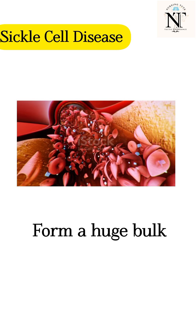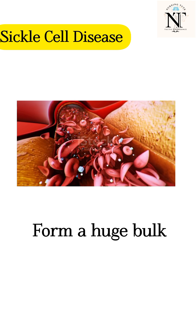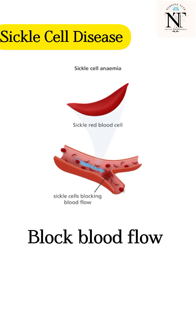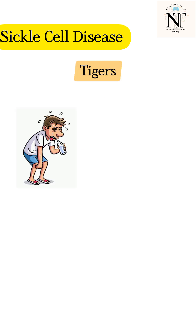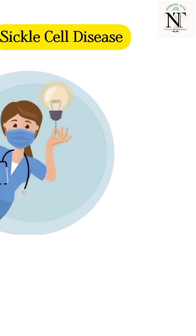These misshapen RBCs do not bend or move easily. They form a huge bulk and can eventually plug the blood flow to the organs and the rest of the body. The triggers for a sickle cell crisis may include dehydration, infection, and stress.